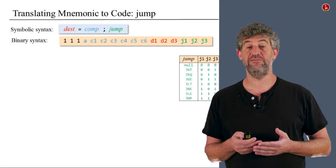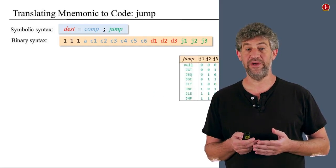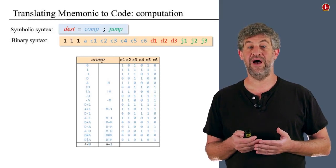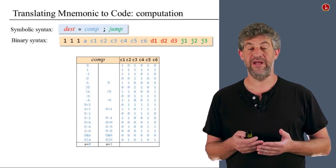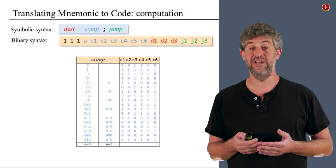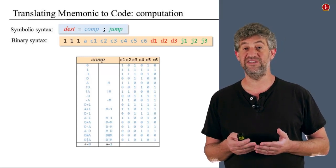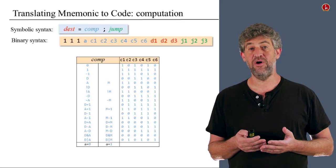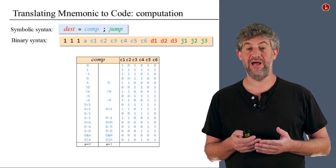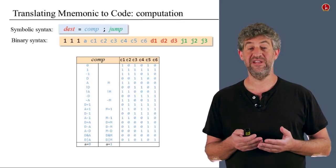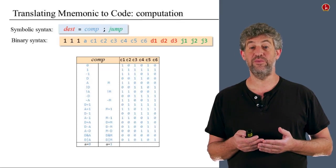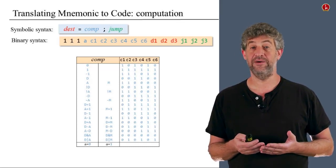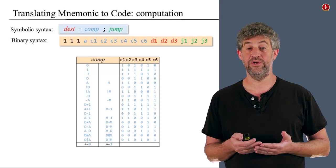Similarly, there was another table to specify the jump location. And yet another table — the biggest one — to specify how you take the computation and translate it into seven bits: one called A and the other called C, that specify the computation in machine language. Recall that a C command actually starts with three one bits. So we also need to put the three one bits, and we have our machine language code.